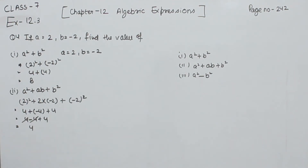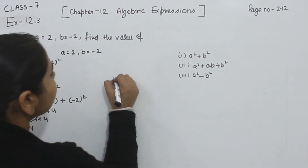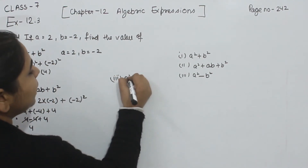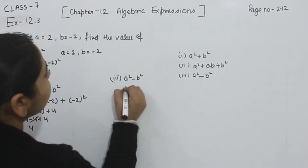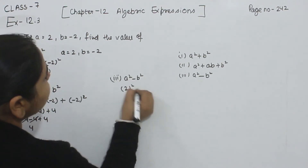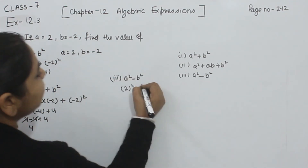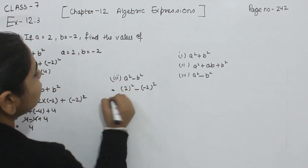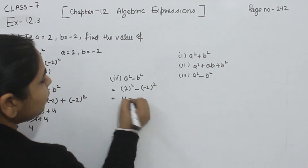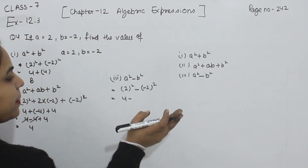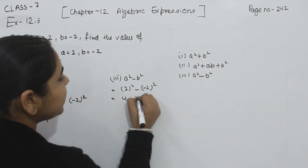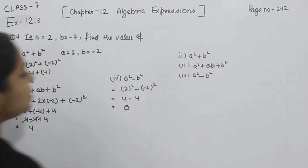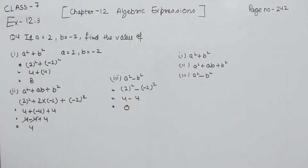Now, coming to part 3: A square minus B square. The value of A is 2 and the value of B is minus 2. So, 2 squared minus minus 2 squared equals 4 minus 4. Since minus and minus gives plus, this becomes 4 minus 4, which is equal to 0.